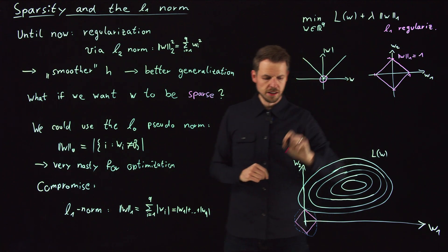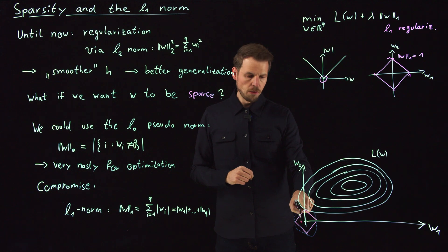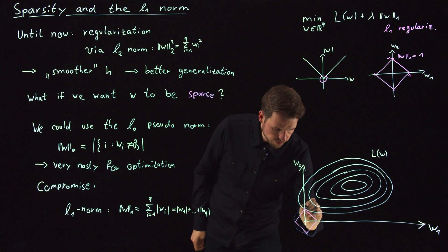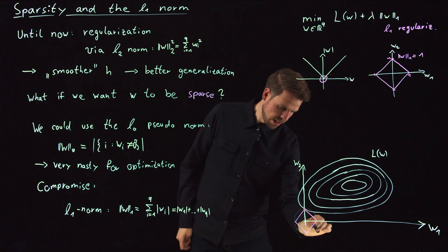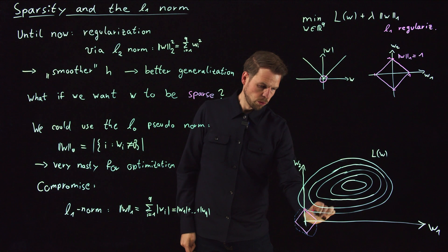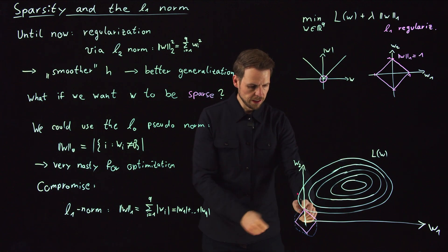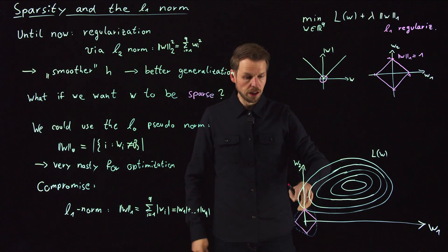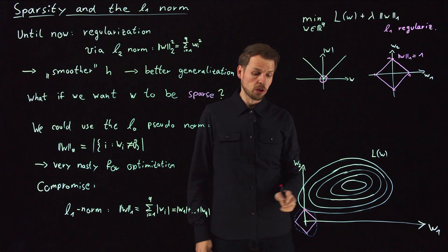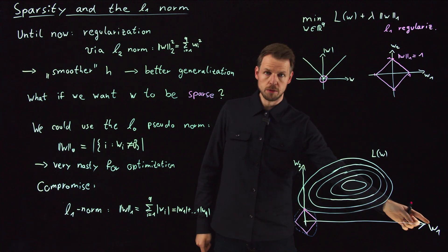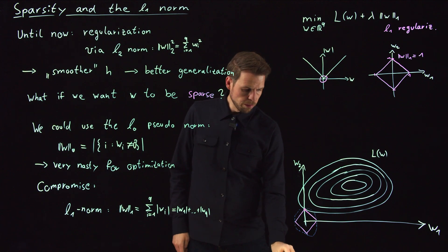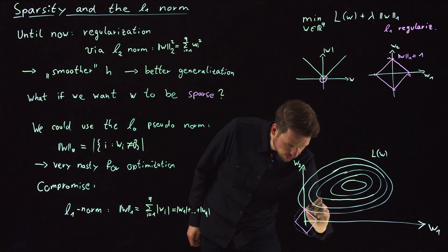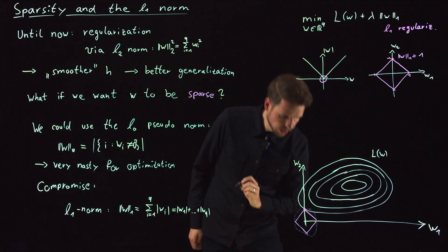And now you see something. The smallest loss function value with this norm is actually this point. So wherever else we have the same norm value, we are further away from this minimum. So clearly this is the, for this norm 1, the 1-norm being 1, this is the smallest loss function value. And it coincides with one axis, which means the w1 would be 0 in this case. Whereas if we minimize the 2-norm as a constraint or a regularization parameter, we would get a point like this.